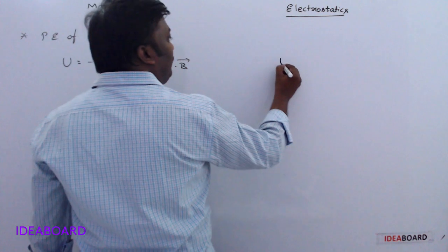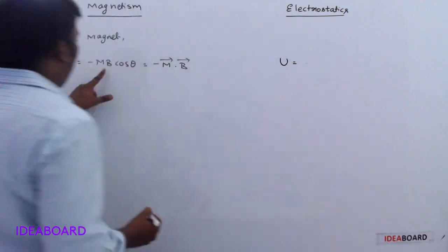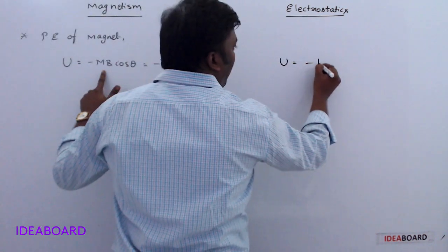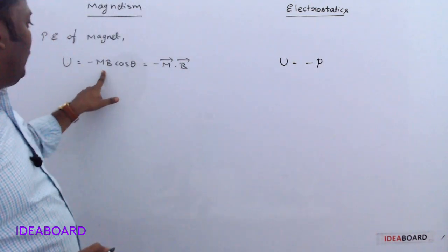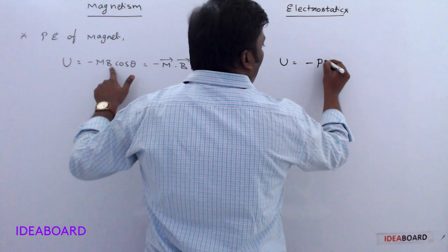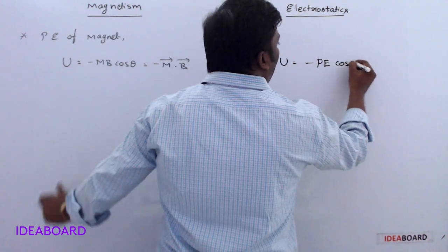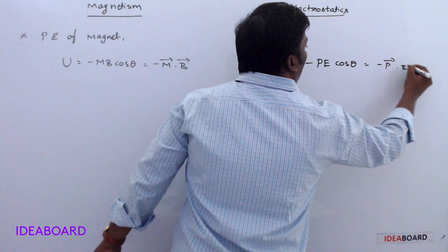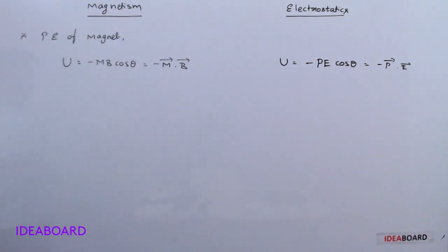The potential energy of a magnetic dipole in a magnetic field: U = −MB cosθ, or in vector form U = −M-bar · B-bar. The analogous expression for an electric dipole in electrostatics: M is replaced by P and B by E, giving U = −PE cosθ, or U = −P-bar · E-bar.